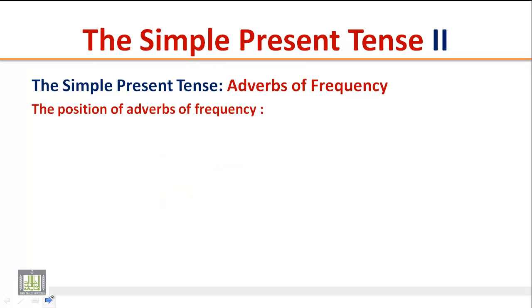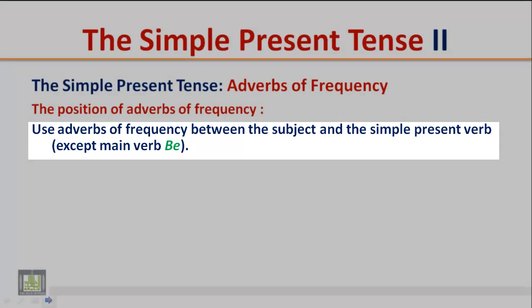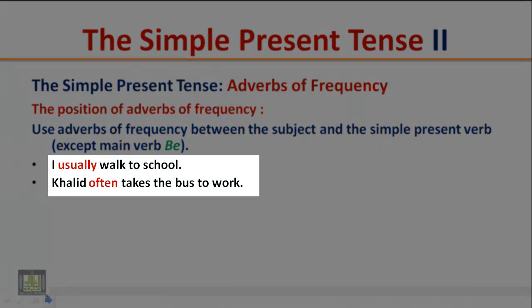The position of adverbs of frequency: Use adverbs of frequency between the subject and the simple present verb, except main verb be. Examples: I usually walk to school. Khalid often takes the bus to work. Notice here that the adverb of frequency comes between the subject and the main verb.